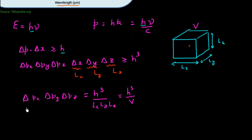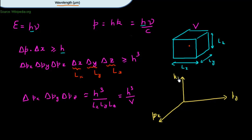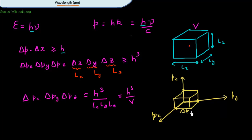This equation tells me that each state possible in momentum space occupies a certain volume. In my three-dimensional momentum space with axes Px, Py, and Pz, each solution occupies ΔPx in one direction, ΔPy in another, and ΔPz in the third — forming a cuboid whose volume ΔPx·ΔPy·ΔPz is given by h³/V.